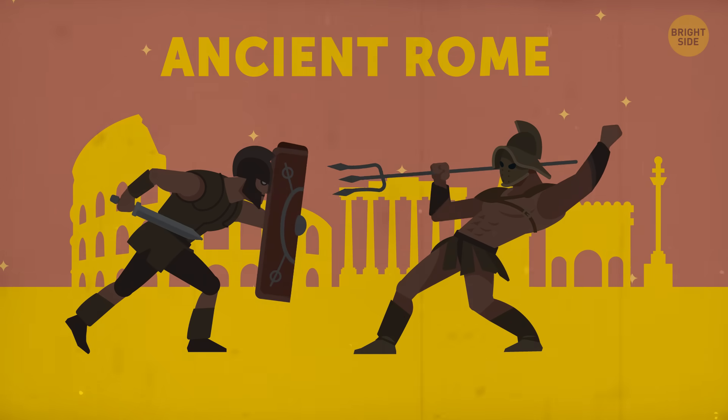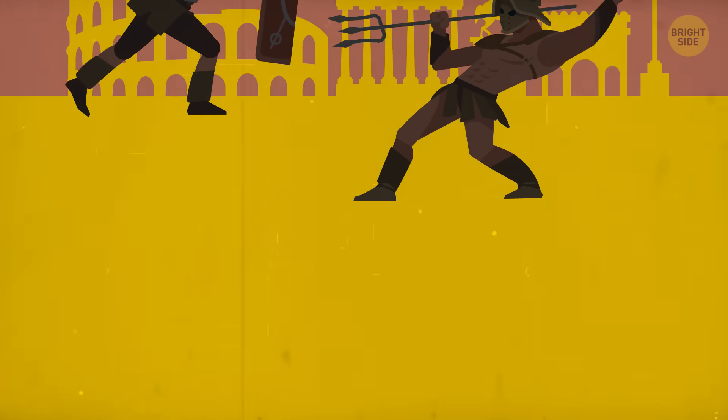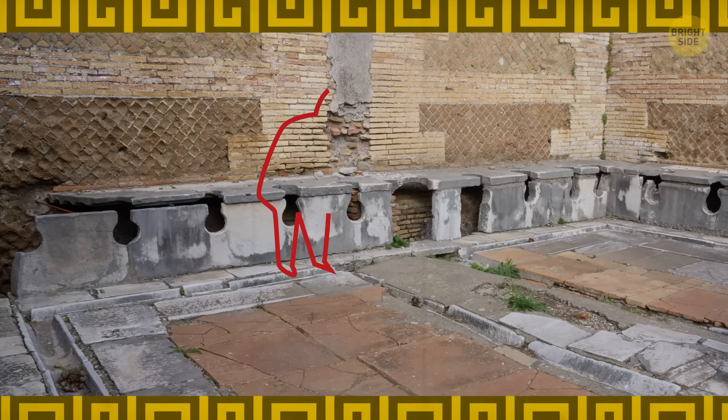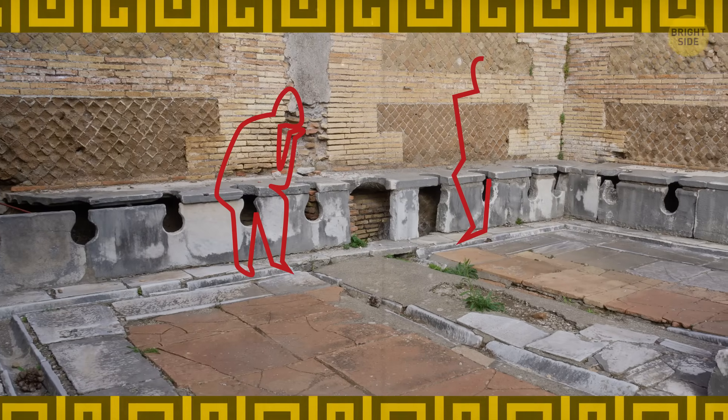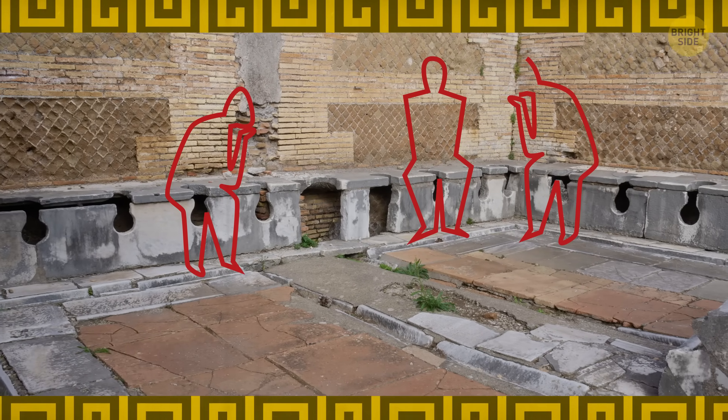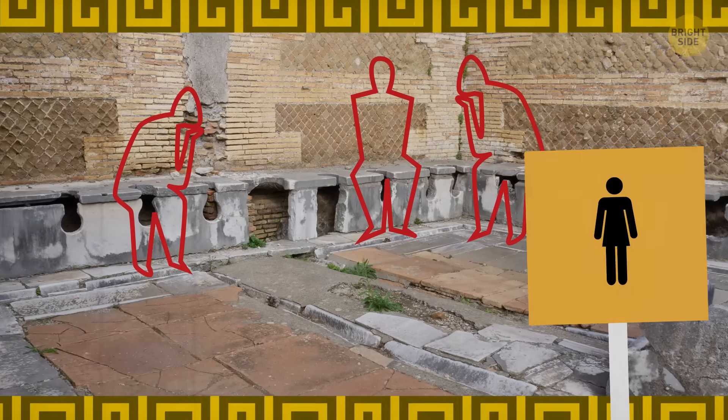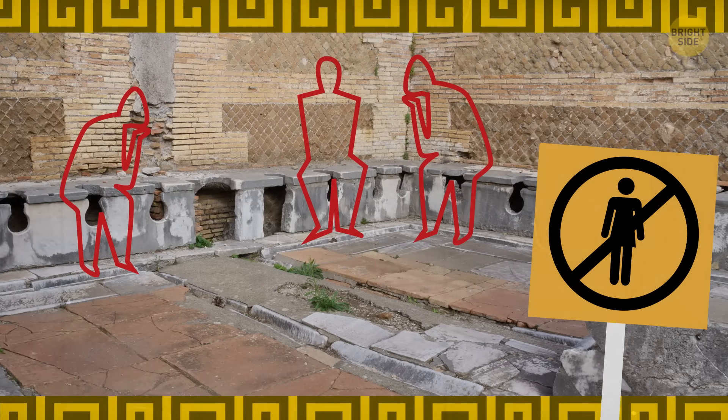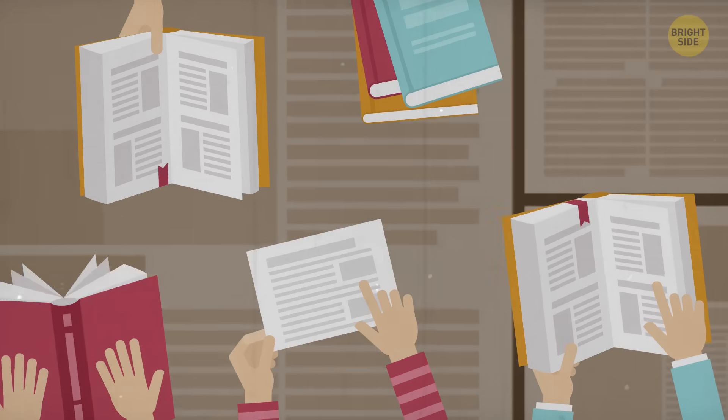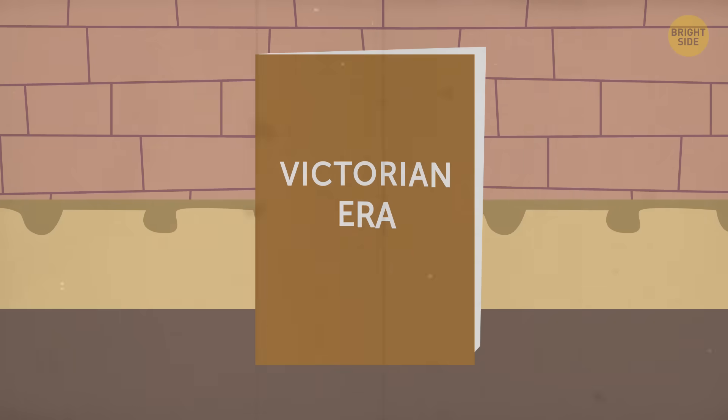But citizens of Ancient Rome weren't so lucky. Ancient Rome's public bathrooms were simply long wooden benches with several holes that patrons would sit over. Women weren't allowed to use these public toilets. In fact,